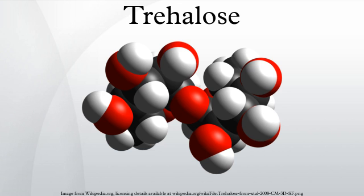When tardigrades dry out, the glucose in their bodies changes to trehalose as they enter a state called cryptobiosis, wherein they appear dead. However, when they receive water, they revive and return to their metabolic state. It is also thought that the larvae of sleeping chironomid midges and brine shrimp are able to withstand dehydration because they store trehalose within their cells. Even within the plant kingdom, selaginella — which grows in desert and mountainous areas — may crack and dry out, but will turn green again and revive after rain because of trehalose.